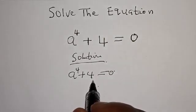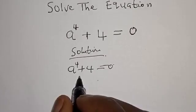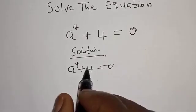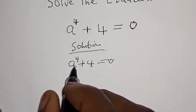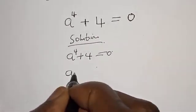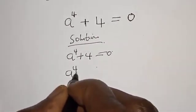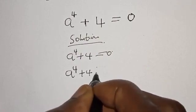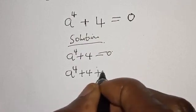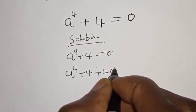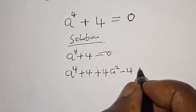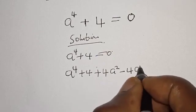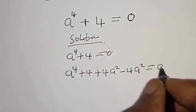We are going to manipulate this equation such that it will be easier to work with. Let's add and subtract 4a squared. Then we have a raised to the power of 4 plus 4 plus 4a squared minus 4a squared equal to 0.